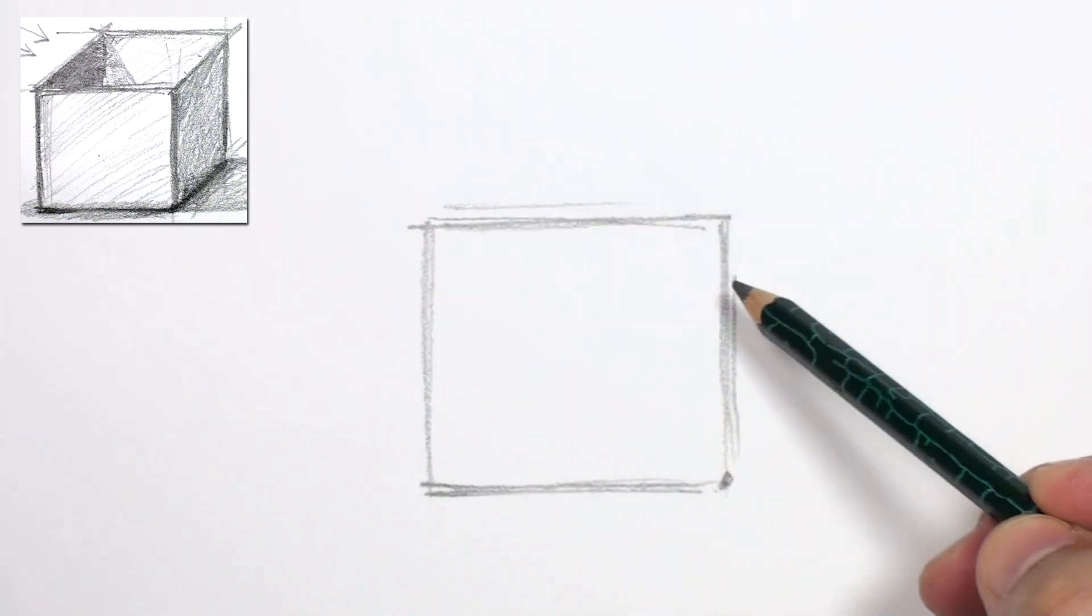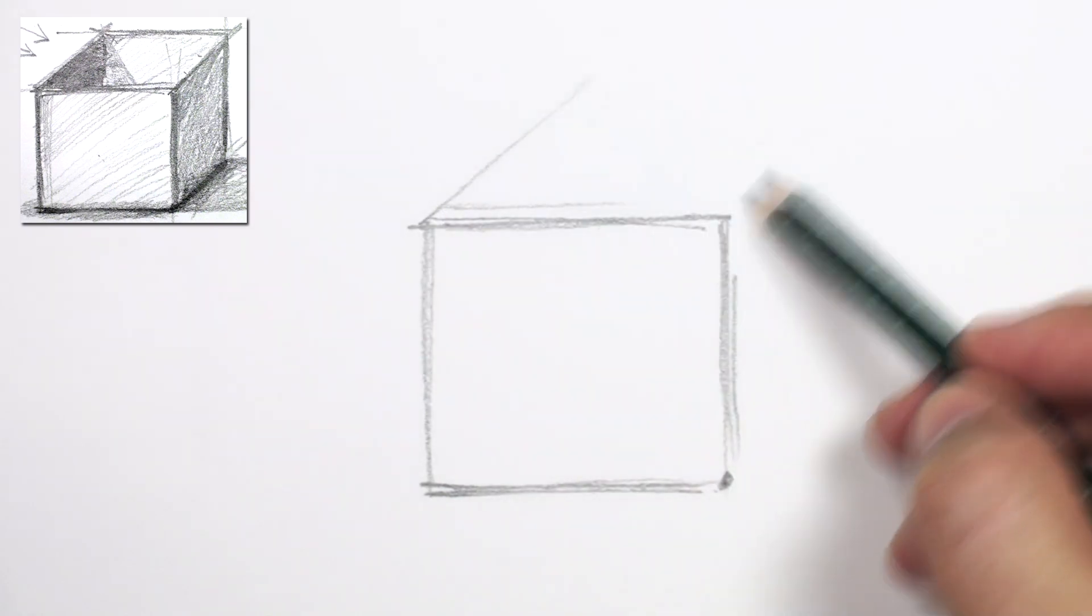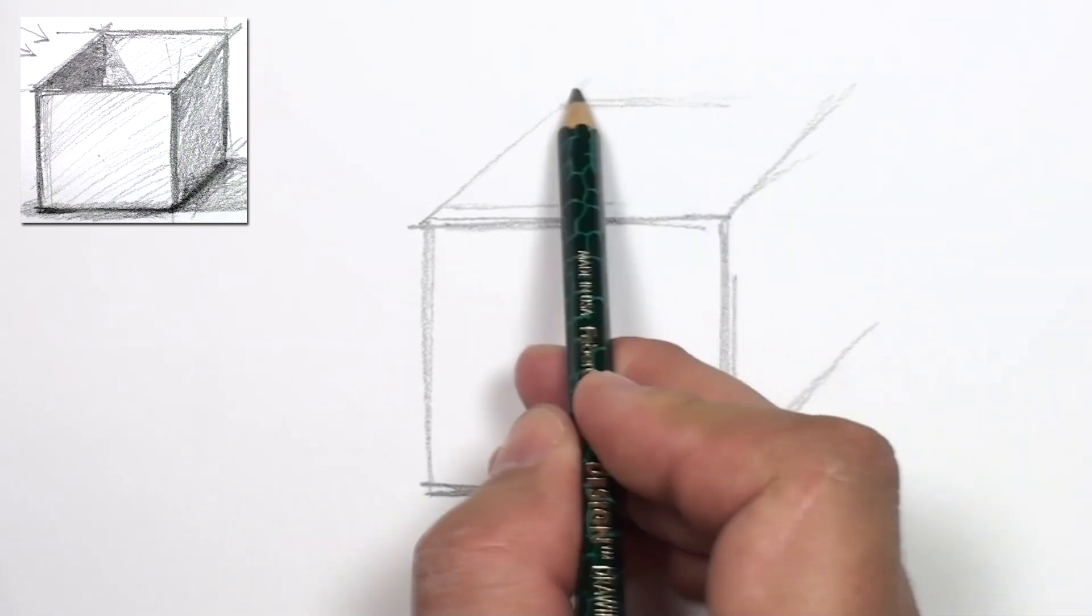What we're going to do is draw diagonals off of these corners. So draw a line off of each of these corners, and then we're going to draw the back side of the box.